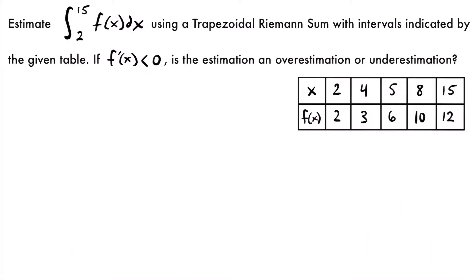Assuming you are familiar with Riemann sums and the trapezoidal rule, this problem is going to be a little different in how we estimate the area under the function. In most cases, we use rectangles or trapezoids that have equal widths, meaning the intervals are equal. However, in this case, looking at this table, our intervals are not going to be equal, so the process of estimating is going to be a little different.